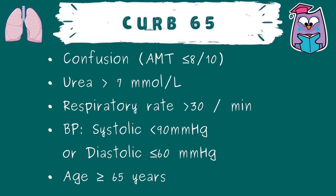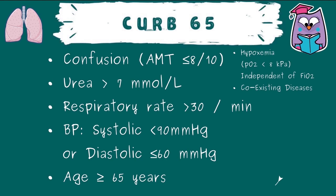Each criterion gives one point: Confusion — new onset, where the Abbreviated Mental Test scores eight or below; Urea more than seven; Respiratory rate more than 30; one point for BP even if both values are lower than the threshold; and Age 65 or above scores one point. In total you can score five points.